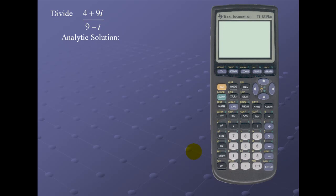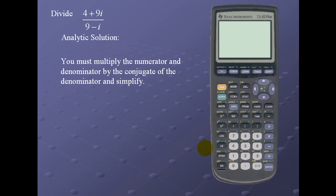Let's divide (4 + 9i) divided by (9 - i). To solve analytically, we must multiply the numerator and the denominator by the conjugate of the denominator and then simplify. The denominator is 9 - i, so its conjugate is 9 + i. We multiply both the numerator and denominator by 9 + i.